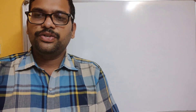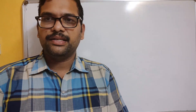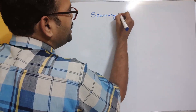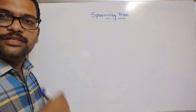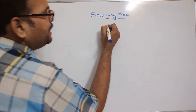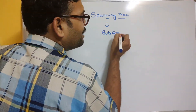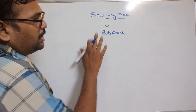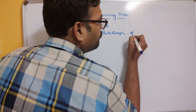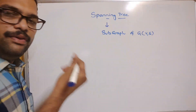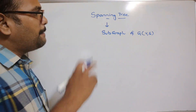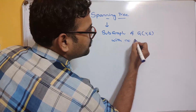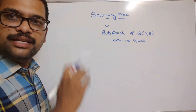Welcome back to our channel. In today's session we'll discuss one more topic in data structures: the spanning tree. A spanning tree is a sub-graph. Graphs are connected nodes with edges and cycles, but a spanning tree is a sub-graph with no cycles. If it does not have any cycles, we call it a tree.